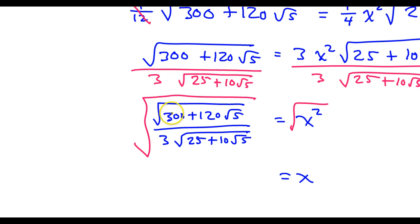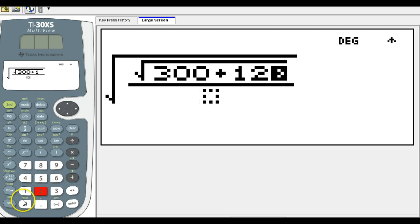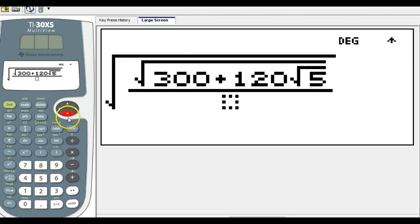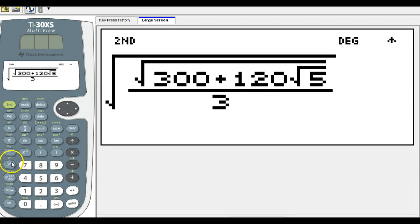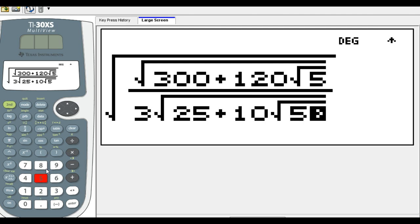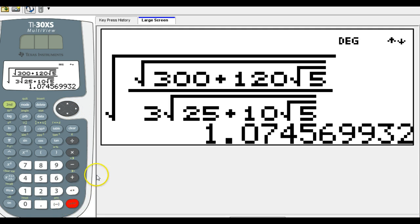So let's start with a square root and then we have a fraction in there. So in the numerator we have another square root up there. So get another square root going and in there I have 300 plus 120 and then I think I have a square root was it a 5. And then in the denominator I have 3 radical. So there's my 3 radical 25 plus 10 radical 5. I think I've done it. I've typed in the entire thing. Moment of truth to get out of all this and hit enter.